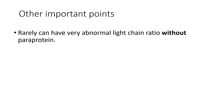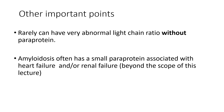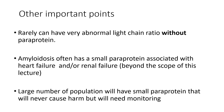A few other important points: rarely, you can have an abnormal light chain ratio without a paraprotein — so you'll see abnormal serum-free light chains but no paraprotein found. It's also worth knowing about amyloidosis, which is usually associated with a smaller paraprotein and is linked to heart failure and renal failure — that's beyond the scope of this lecture but worth reading up on. Be aware that a large number of the population will have a small paraprotein that will never cause harm, but does need monitoring in case it becomes myeloma.